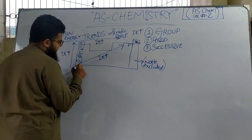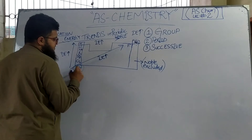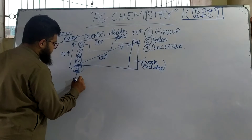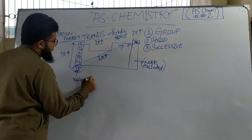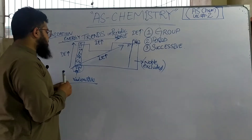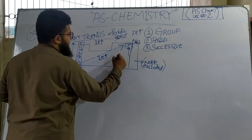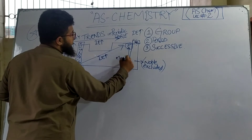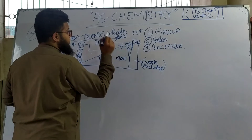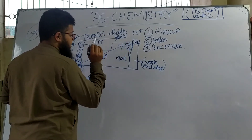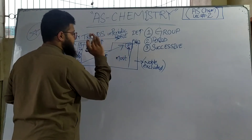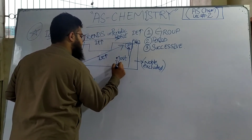The radioactive elements are also excluded. Francium in Group 1 is excluded because it's radioactive. According to this trend, fluorine will be the element with the highest ionization energy in the periodic table, excluding noble gases and radioactive elements.